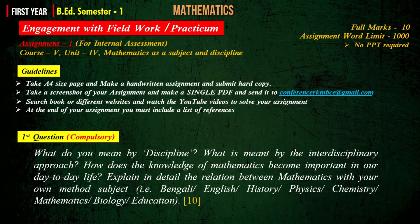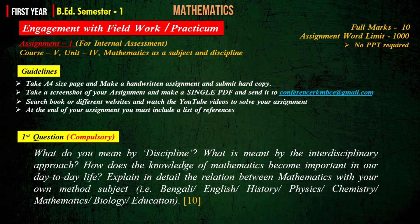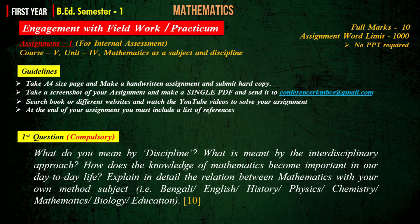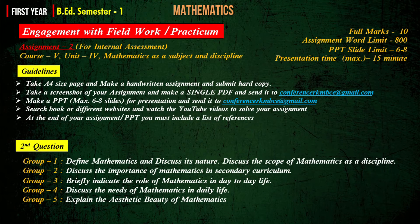In B.Ed Semester 1, Course 5, you have to do two assignments. The first assignment is compulsory for all students. Take an A4 size page, make a handwritten assignment, and submit a hard copy. Take a screenshot of your assignment, make a single PDF, and send it to conferencerkmbc@gmail.com. Search books or different websites and watch YouTube videos to solve your assignment. At the end, you must include a list of references. The maximum word limit is 1000 and no PowerPoint presentation is required.